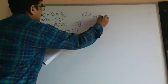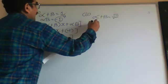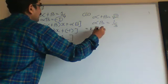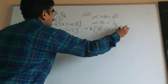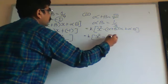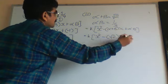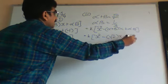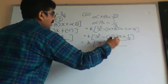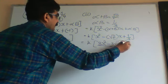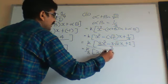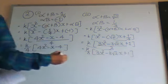For the second part: α + β is given as √2 and αβ is 1/3. The formula is x² minus (sum of roots)x plus (product of roots). Putting in the values, we get x² minus √2·x plus 1/3. Taking LCM, we write k/3 into [3x² minus 3√2·x plus 1]. Hence the answer is 3x² - 3√2x + 1.